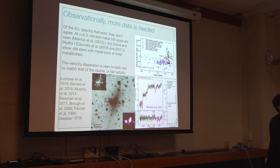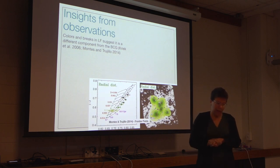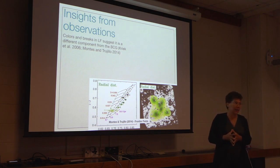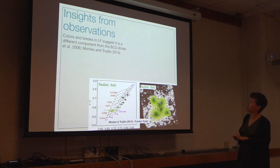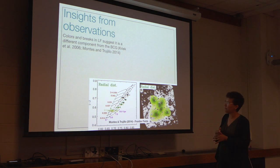This is interesting because you can ask if the stars are following the galaxy potential or the cluster potential. There has been lots of work done on looking at galaxy outskirts in the ICL for quite a while using photometry. Some of the papers I like to quote are the breaks in color that Montes and Trulio find in the frontier fields.